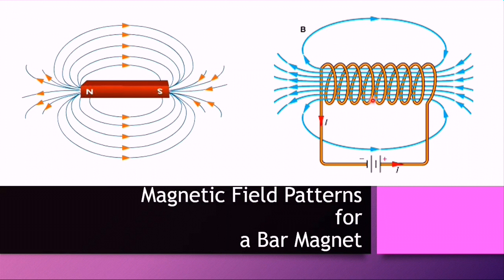Inside the solenoid, it can be seen that the lines of flux are close together. They are parallel and equally spaced, hence the field is uniform and strong inside the solenoid.